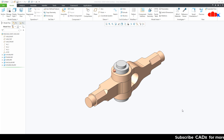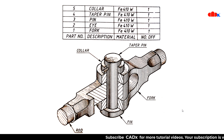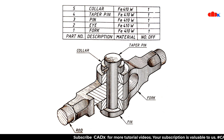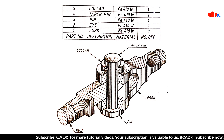To calculate the total weight of the entire assembly, first you need to open each individual part and assign the material. For that, you must know the material of each individual part. Let us see this assembly drawing. Here if you see the material, it is the same for all the parts: FE410W. So I will use the same material for all the parts. In your case, it may differ from one part to another.